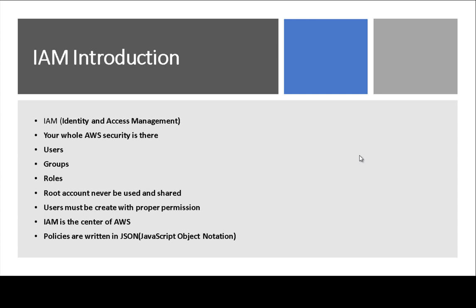IAM is the center of AWS. In IAM, we define policies, and the policies are written in JSON - JavaScript Object Notation. So keep these points in mind.